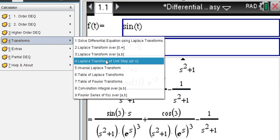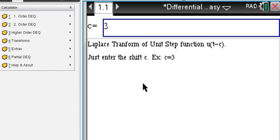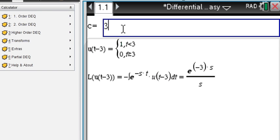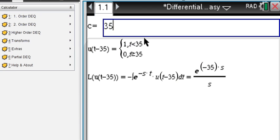We can also do the Laplace transform of a unit step function. Just to indicate the shift that you want to use, let's say shift of 3, then you see the definition of the unit step function here and the Laplace transform of the unit step function is then shown right here. You change the shift, you change the Laplace transform immediately.